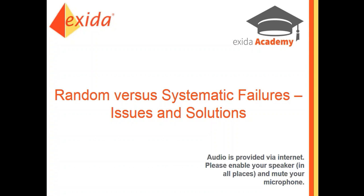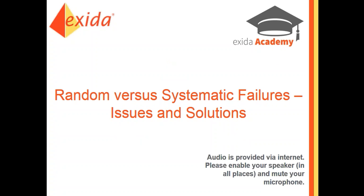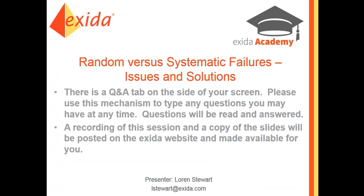Welcome to this webinar where we are going to be talking about random and systematic failures — what are their issues and what can we do about them. A little housekeeping: there is a Q&A tab on your panel on the right side of your screen. Please feel free to type in questions. There will be a recording available on the Exeter website and YouTube channel.